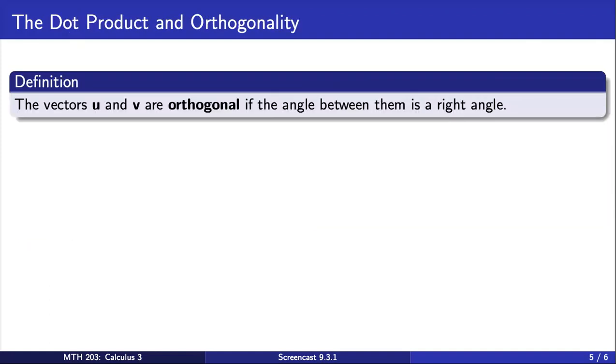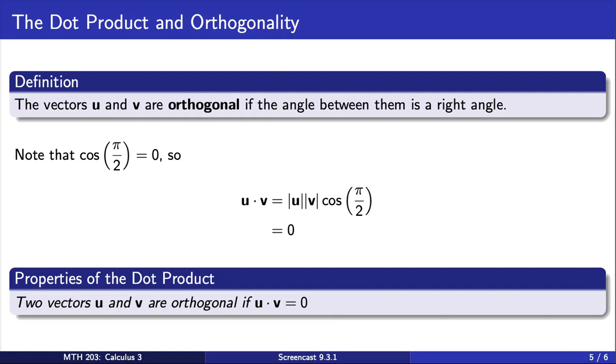The vectors u and v are orthogonal if the angle between them is a right angle. Note that cosine of a right angle is equal to 0. So using the relationship from the previous slide, we see that the dot product of two such vectors is equal to 0.